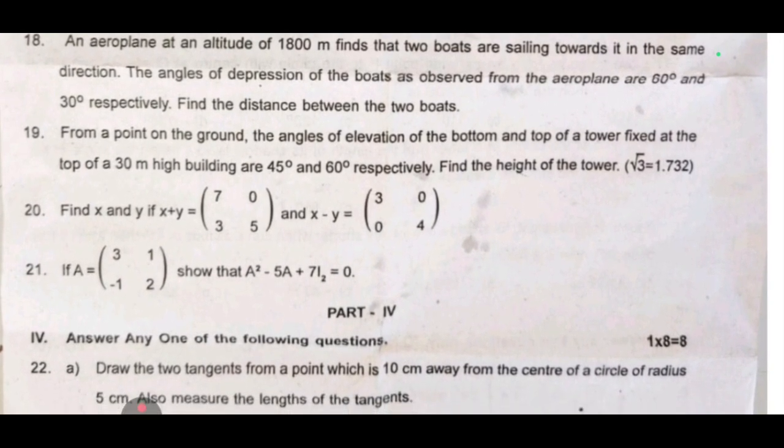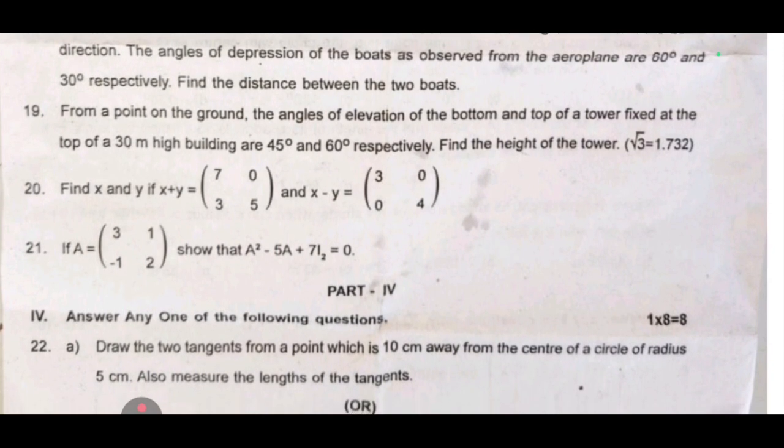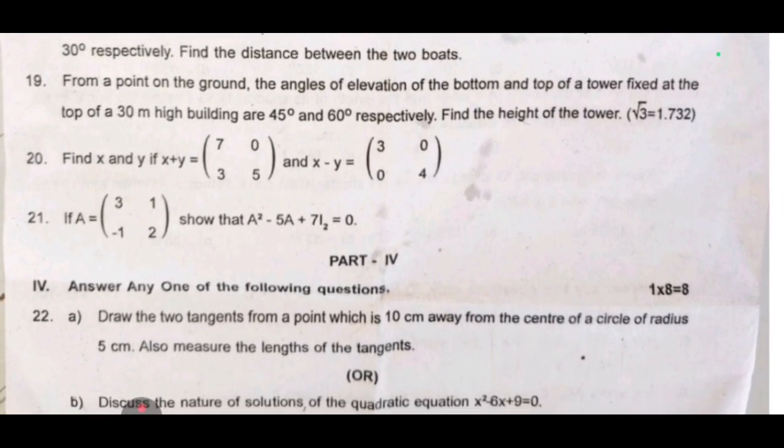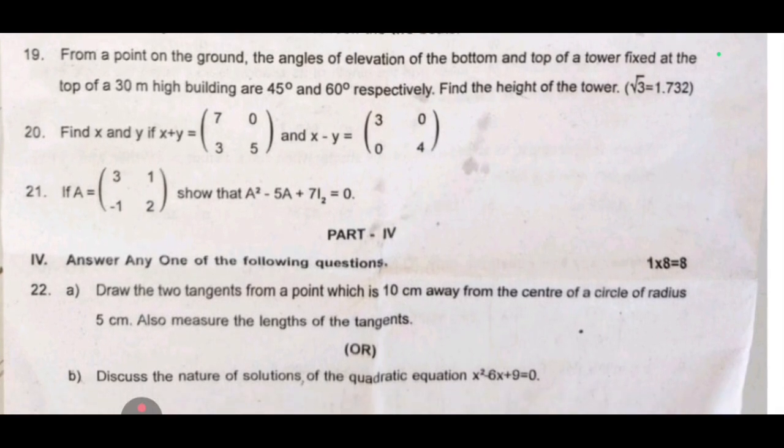Root 3 value, find x and y if x plus y and x minus y. 21: if A equal to show that A square minus 5A plus 7I is 2 equal to 0.